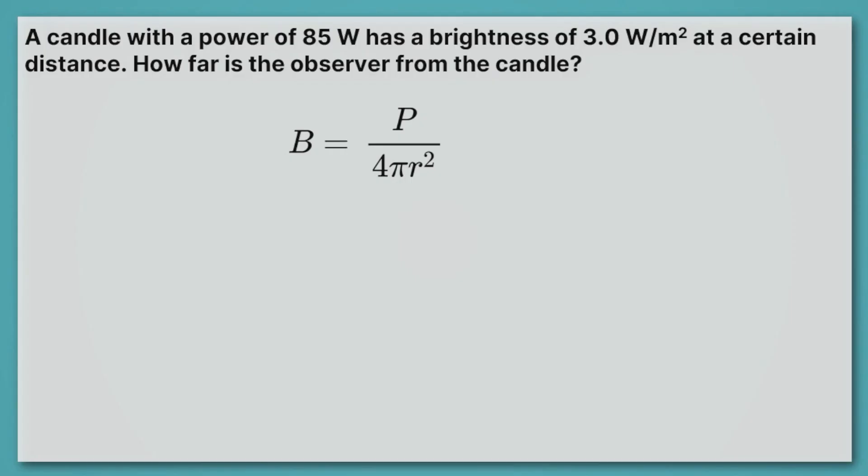Okay, let's put this equation into use. This problem says, a candle with a power of 85 watts has a brightness of 3.0 watts per meter squared at a certain distance. How far is the observer from the candle? So we're trying to figure out how far away we are from the candle by how bright it is. This is actually analogous to how scientists, specifically astronomers, use the brightness of stars to figure out how far away they are. Let's start by writing down the variables we've been given. We've been given the power of our candle, and we're told that it is 85 watts. I think that's a pretty powerful candle. Then we're told the brightness of the candle. We know that at some particular distance, it's going to be 3.0 watts per meter squared. And we're told to find the distance. In this case, that is going to be represented by the variable r.